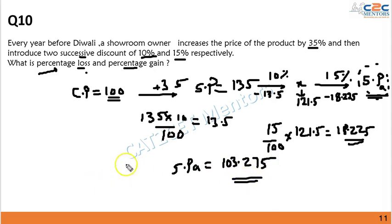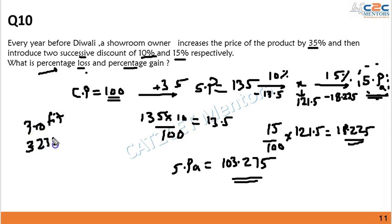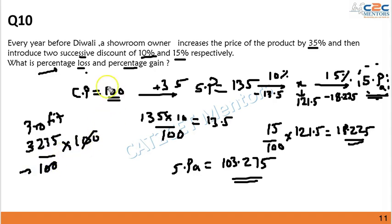As you can see, the selling price is higher than the cost price, so this is a profitable transaction. The profit is 3.275 rupees. Taking the base as 100 (our cost price) and multiplying by 100 gives a profit percentage of 3.275%.